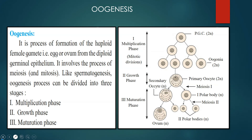We will continue with gametogenesis with respect to the female, that is oogenesis. Just as there is spermatogenesis, similarly we have oogenesis. Genesis means formation — formation of the egg. It is the process of formation of the haploid female gamete, that is egg or ovum, from the diploid germinal epithelium. It involves the processes of meiosis and mitosis. Like spermatogenesis, oogenesis can be divided into three stages: multiplication phase, growth phase, and maturation phase.